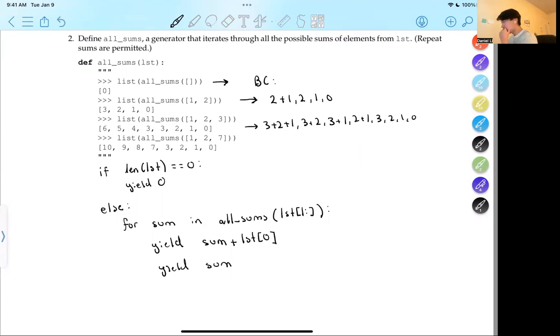So why did I do this? For the first thing is that for non-empty lists, this part of the code is executed and it takes the first element of the list and considers two possibilities. The first possibility is that it's going to include the first element in the sum by adding it to the result of the recursive call all sums list starting from the next one. This represents the case where the first element is part of the sum. And secondly, the second sum is basically yield the recursive call without adding on the first element. This represents the case where the first element is excluded from the sum. And then the loop goes through each sum generated by the recursive call and then yields two values for each, one corresponding to two possibilities.